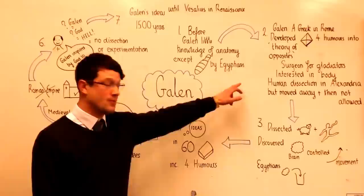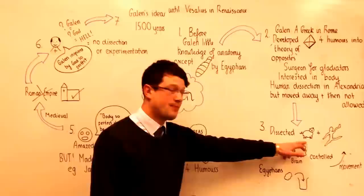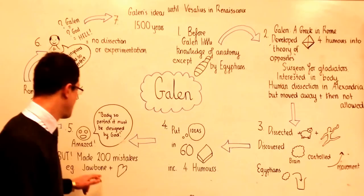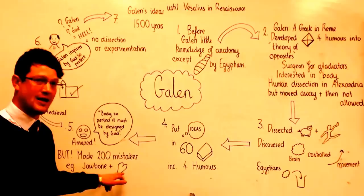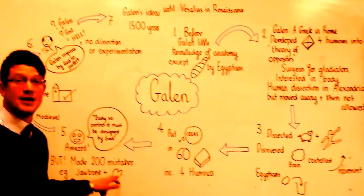However, Galen made over 200 mistakes. Because he was dissecting pigs, apes, and monkeys and not humans, he believed the jawbone came in two parts, whereas in a human it is only one. He also believed that blood passed through the septum in the heart through invisible holes. This was later proved to be incorrect.